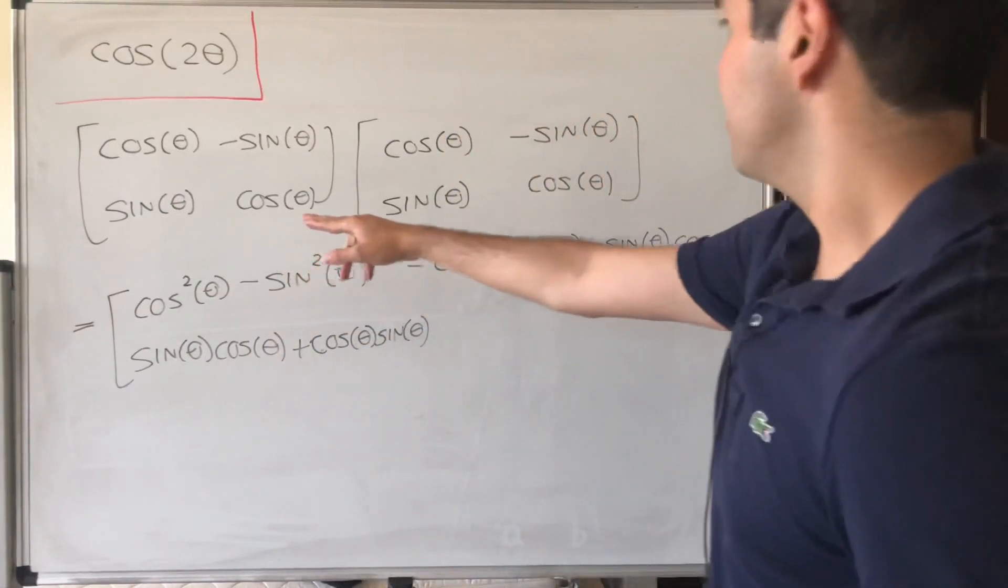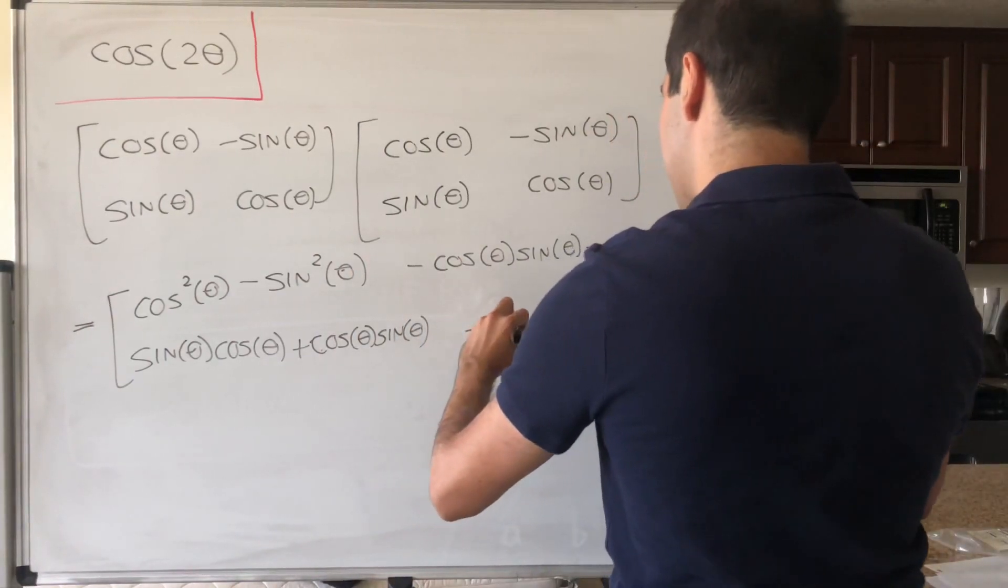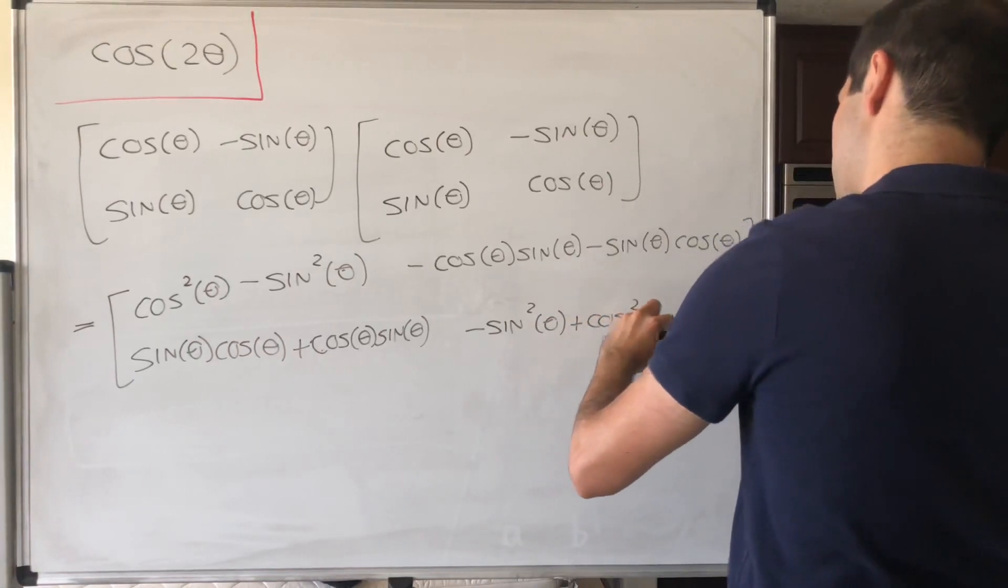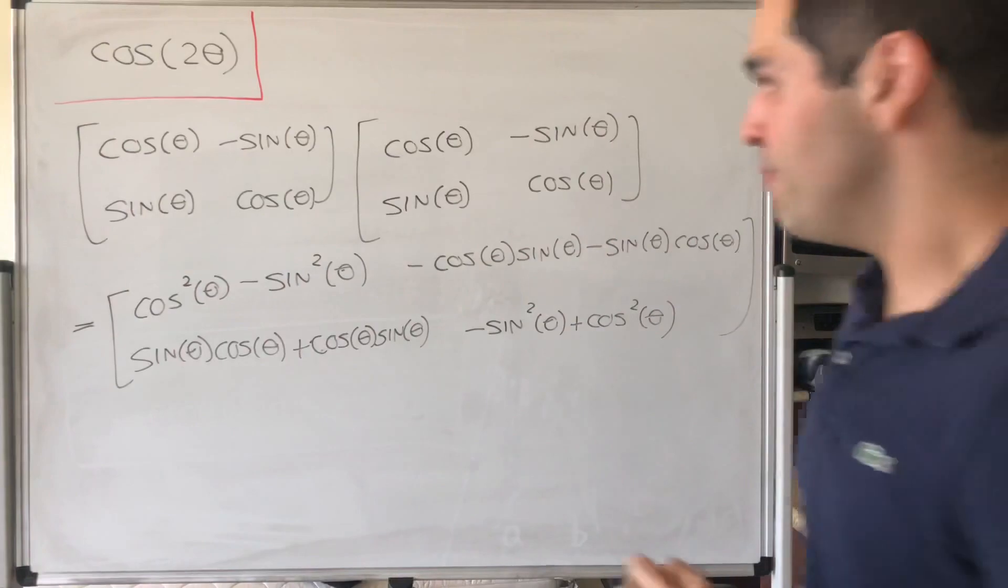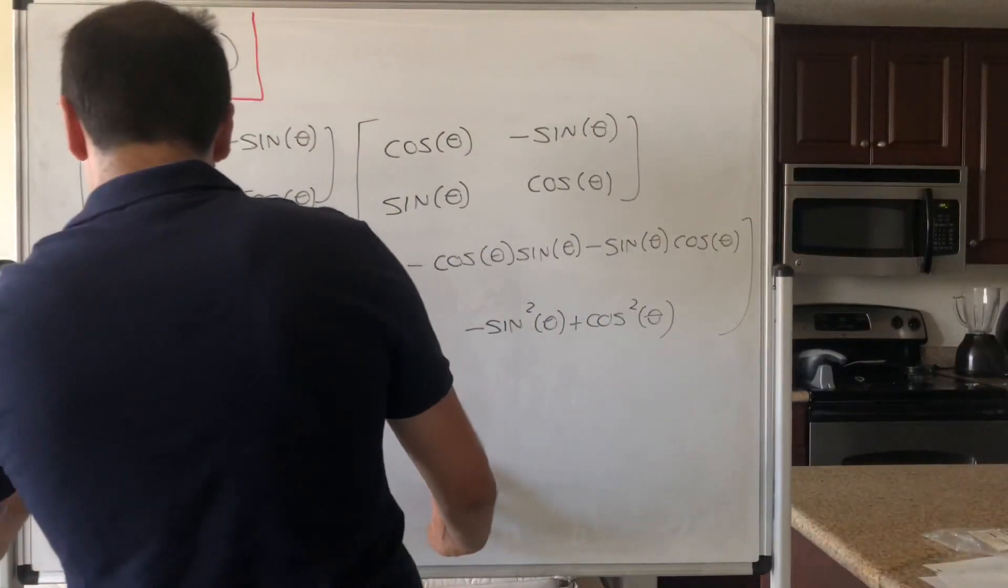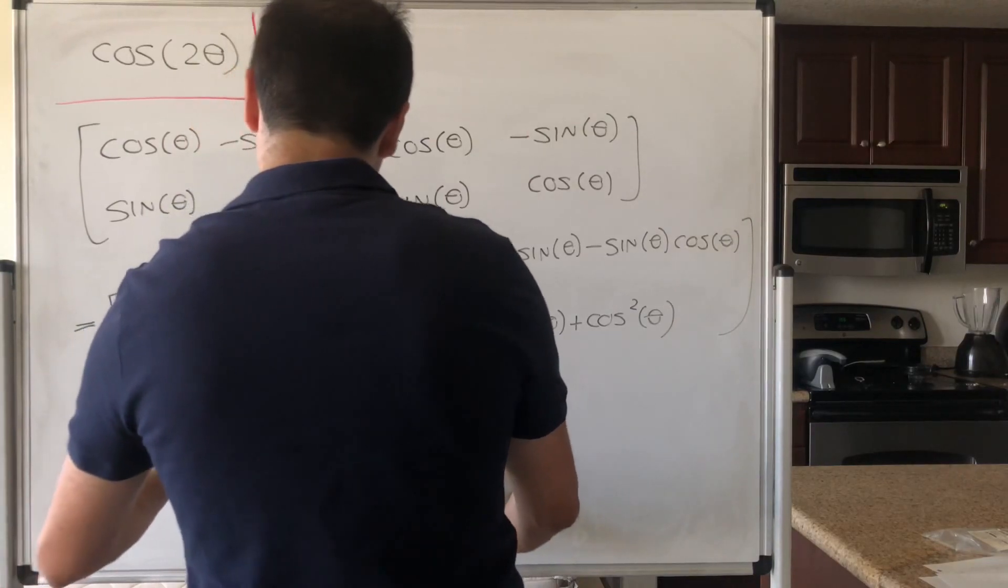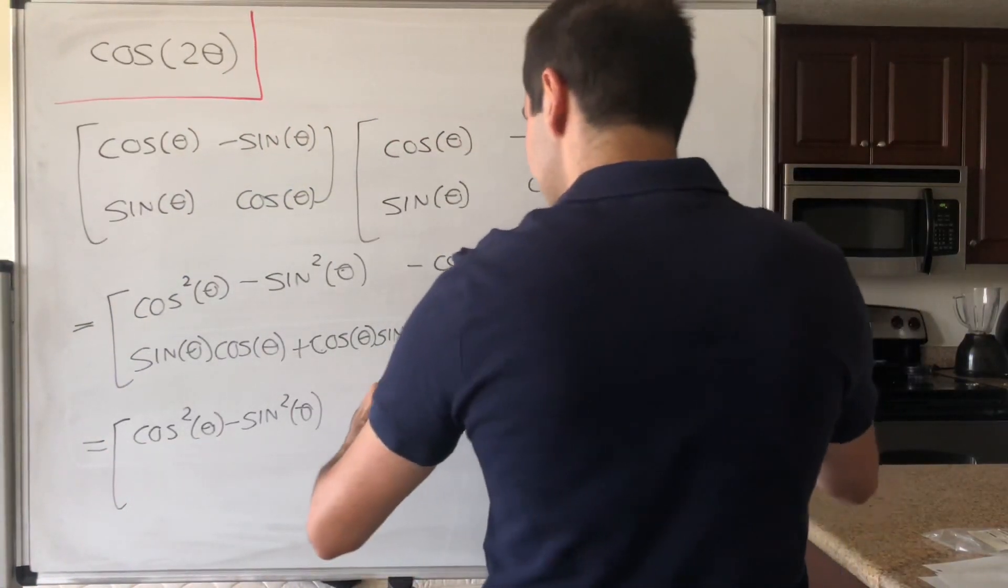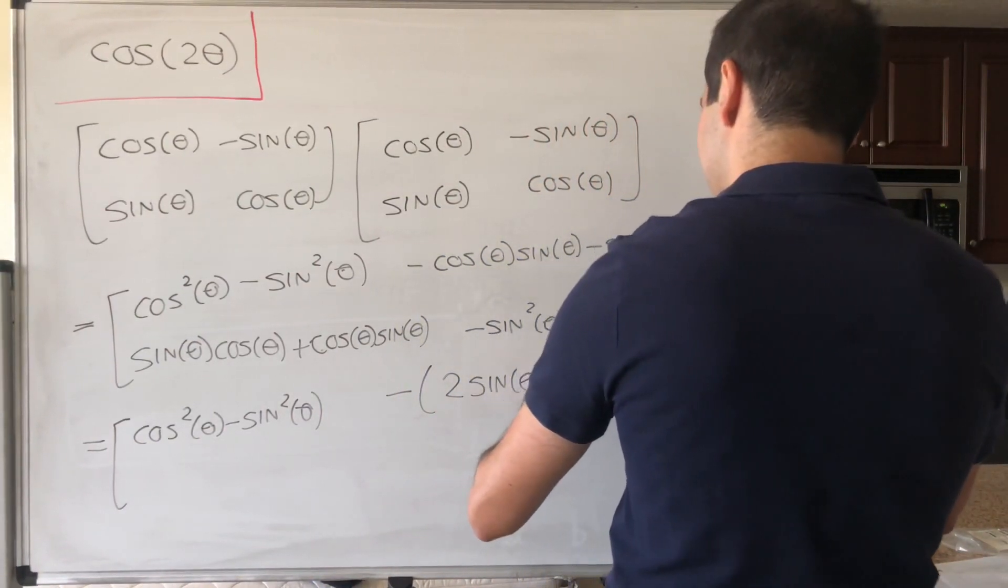And last but not least, so minus sine of theta, plus cosine of theta. And then minus sine of theta, cosine of theta. All right, and then you can simplify this. So this becomes cosine squared of theta, minus sine squared of theta, and then minus, OK, two sine of theta, cosine of theta.